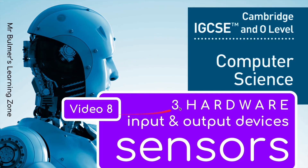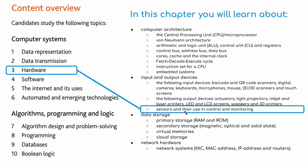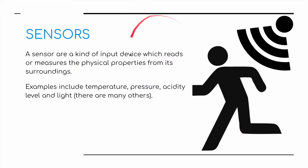Hello and welcome back to video 8 for topic 3, hardware. This time we're going to be looking at sensors for the IGCSE and A-level computer science course — sensors and their use in control and monitoring systems. A sensor is a kind of input device which reads or measures the physical properties from its surroundings. Examples of sensors include temperature, pressure, acidity, level sensors, and light sensors, but there are many more which we'll cover in this video.